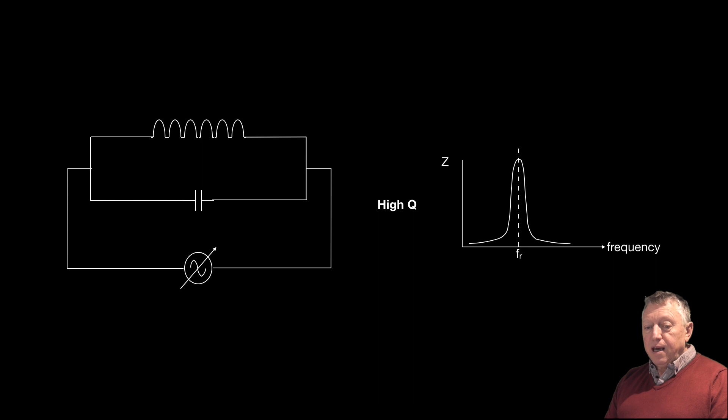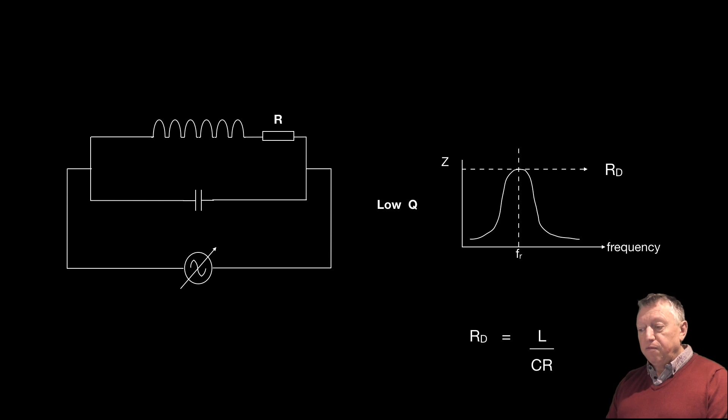We more commonly see it shown like this, a high Q circuit, steep sides, a rounded top. And at resonance, Z would equal, or the impedance would equal, the dynamic resistance. And we've shown that then on the graph. And the equation for dynamic resistance, or dynamic impedance, as it's very often called, is L over CR. So RD equals L over CR.